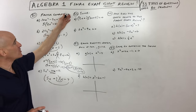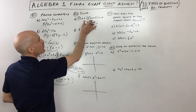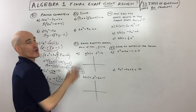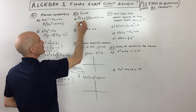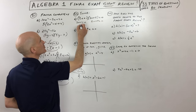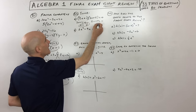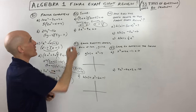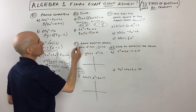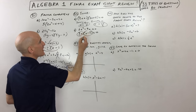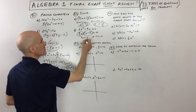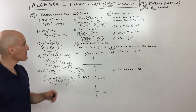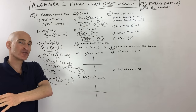Number 22: solve using the zero product property. When a product equals zero, either the first factor equals zero or the second equals zero. Set 3x plus 1 equal to zero and 2x plus 5 equal to zero, giving x equals negative one-third and x equals negative five-halves. For the other problem, first factor out the GCF — that's 3x — giving 3x times x minus 3 equals zero, so x equals 0 or x equals 3.